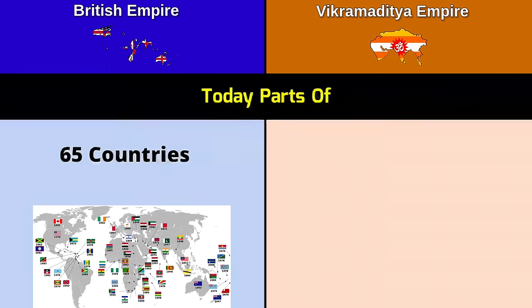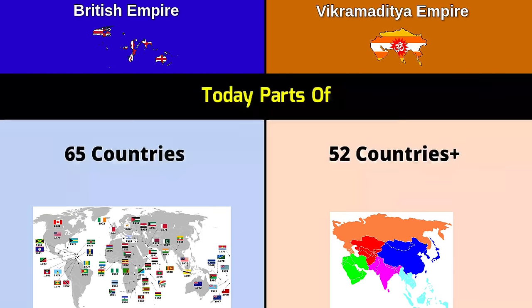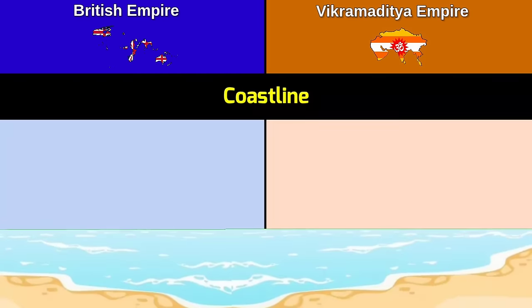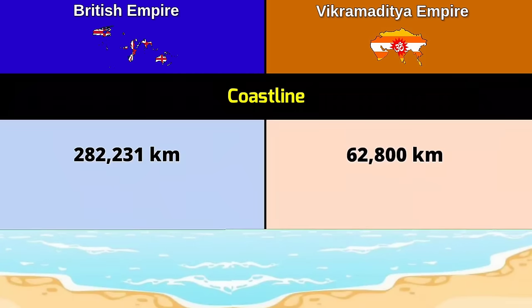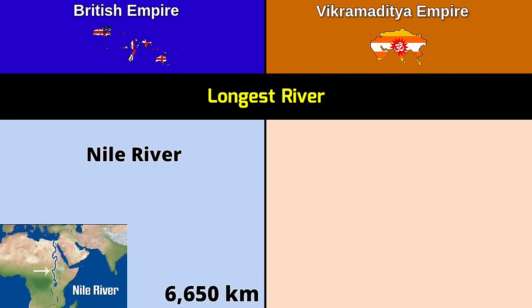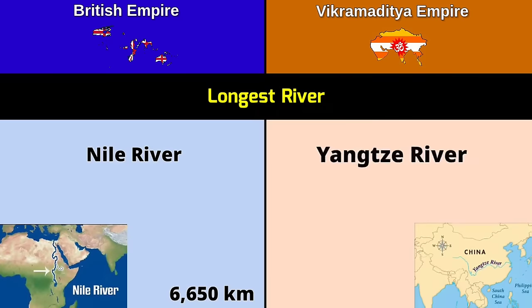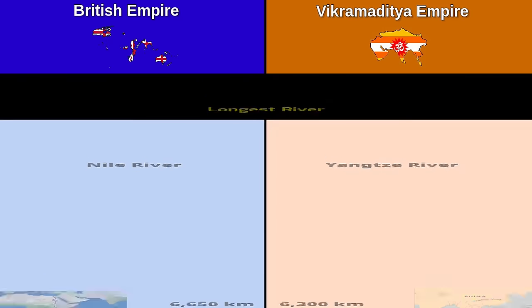Today parts of: British Empire — more than 65 countries; Vikramaditya Empire — more than 52 countries. Coastline: British Empire — 282,231 kilometers; Vikramaditya Empire — 62,800 kilometers. Longest river: British Empire — Nile River, 6,650 kilometers; Vikramaditya Empire — Yangtze River, 6,300 kilometers.